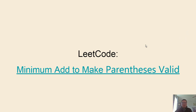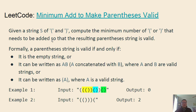Let's look at the next example problem, also from LeetCode. The problem is 'Minimum Add to Make Parentheses Valid.' We are given a string of left and right parentheses and asked to compute the minimum number of additional parentheses we need to add so that the resulting parenthesis string is valid.